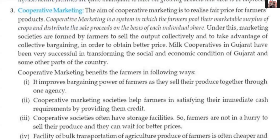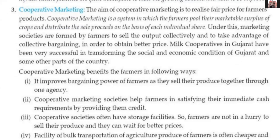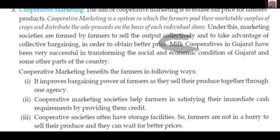Under this, marketing societies are formed by farmers to sell output collectively and to take advantage of collective bargaining in order to obtain a better price. Milk cooperatives in Gujarat are the most famous example of a cooperative society — they brought the white revolution, similar to how the green revolution transformed agriculture. Milk cooperatives in Gujarat have been very successful in transforming the social and economic conditions of Gujarat and some other parts of the country.